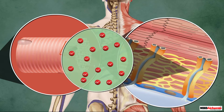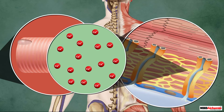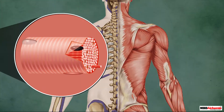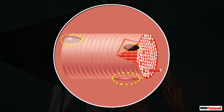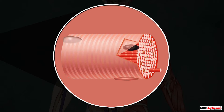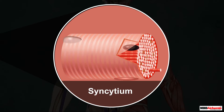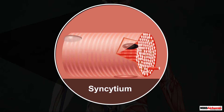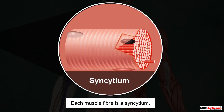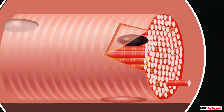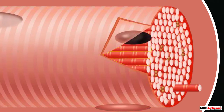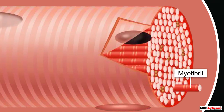The cytoplasm of the muscle fiber is called sarcoplasm. Inside the sarcoplasm, a well-developed endoplasmic reticulum called the sarcoplasmic reticulum is present, which serves as the storehouse of calcium ions. The sarcoplasm also contains several nuclei; such a multi-nucleated mass of cytoplasm is called a syncytium. Thus each muscle fiber is a syncytium. Each fiber also contains a large number of thin, rod-like filaments arranged in a parallel manner called myofibrils.